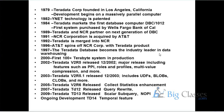Looking at the history of Teradata, it started way back in 1975 and released its first product in 1979 — V1R1 was the first product. Later many new features were added. Major releases came in 2002-2003 with V2R5 and V2R5.1, where prominent features like binary large objects, partition primary index, compression, and user-defined functions were introduced.